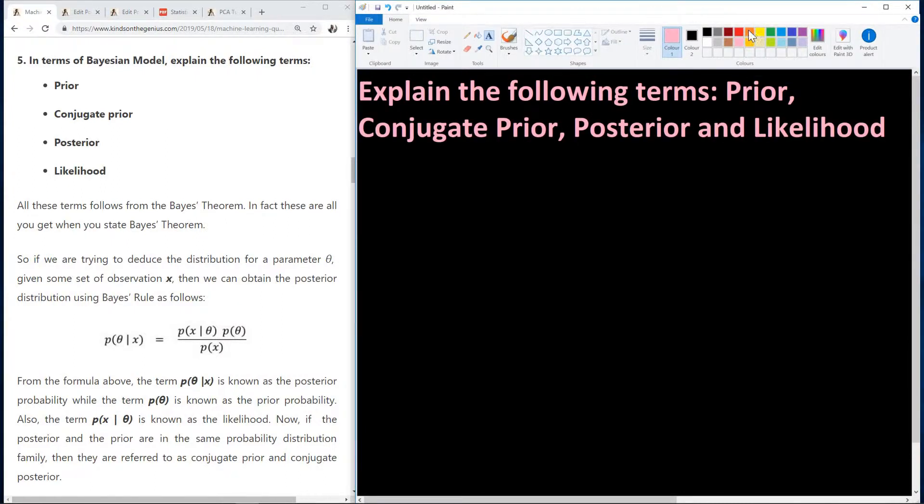Basically, all these themes - prior, posterior, conjugate prior, and likelihood - they are all themes of the Bayes' theorem.